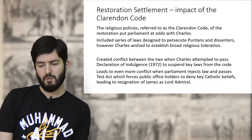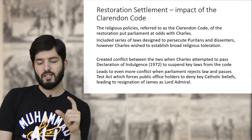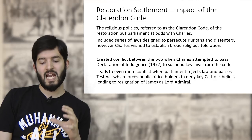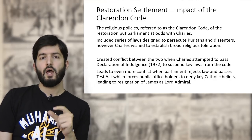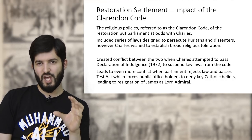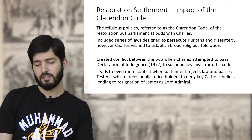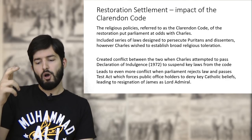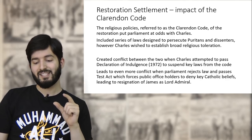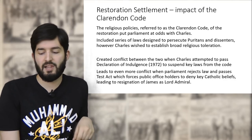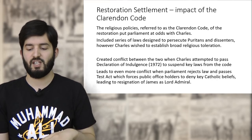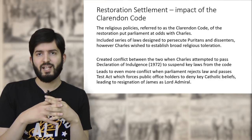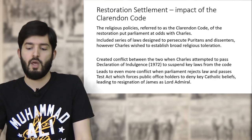This directly leads to conflict between the two when Charles attempts in 1672 to suspend some key laws from the Clarendon Code via the Declaration of Indulgence, specifically suspending the Act of Uniformity which had ejected non-conformist ministers. This creates even more conflict when Parliament rejects the declaration and passes the Test Act, forcing public office holders to deny key Catholic beliefs — eventually leading to the resignation of James, a public Catholic, as Lord Admiral from the Navy. The Clarendon Code thus puts Charles directly at odds with Parliament, creating instability.